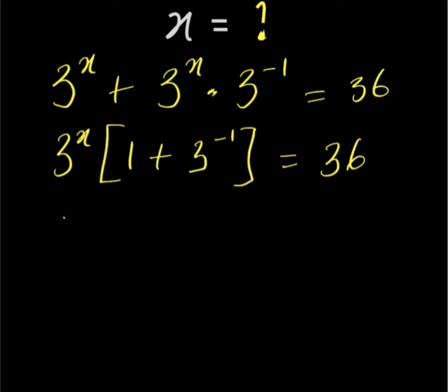From here, we have 3 to the power of x multiplied by 1 plus, from the index law, 3 power minus 1, which is 1 over 3. Everything equals 36.